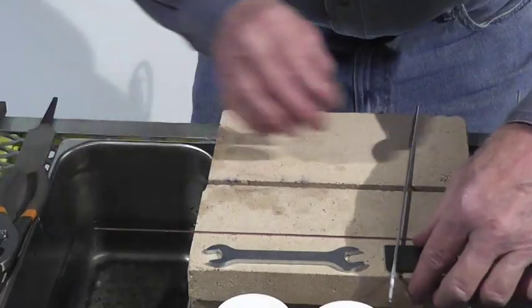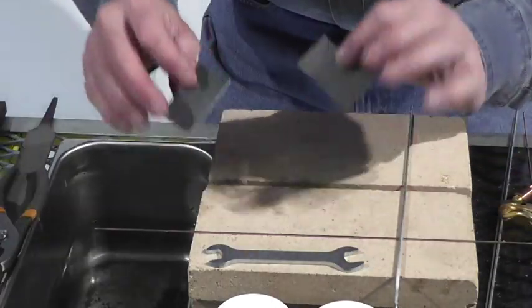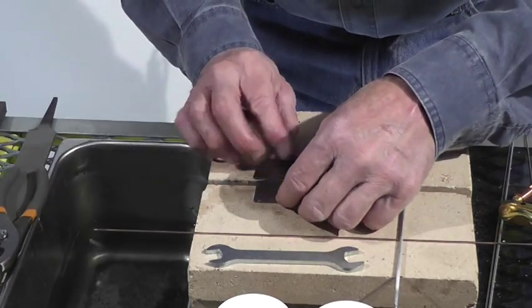Now you can go from four thousandths all the way up to three-eighths thick. Real thin sheet metal. This right here is about twenty gauge.